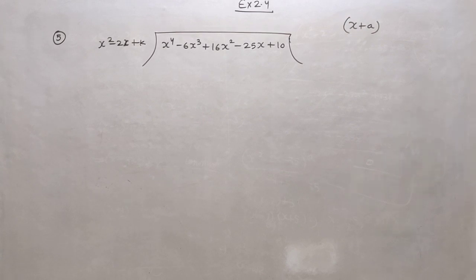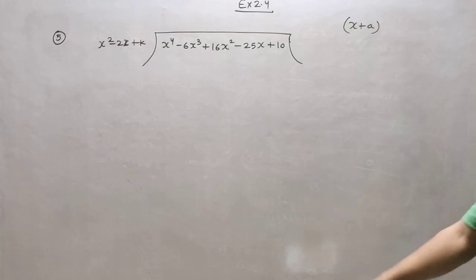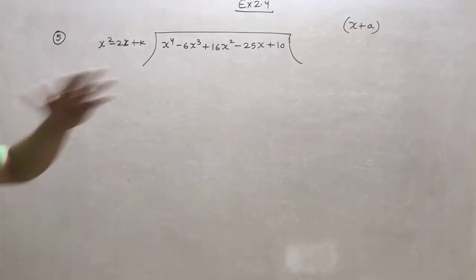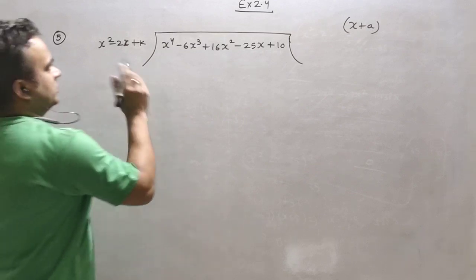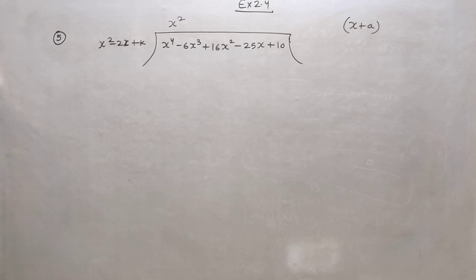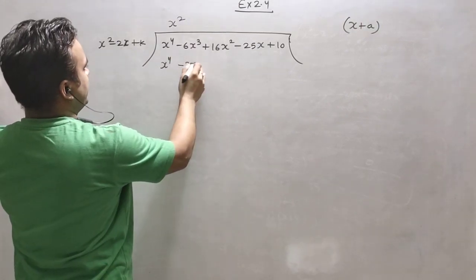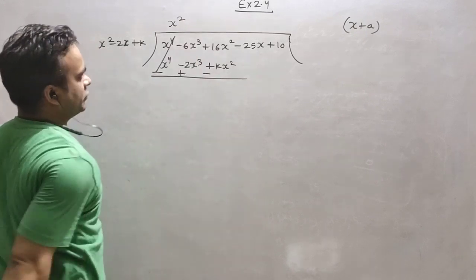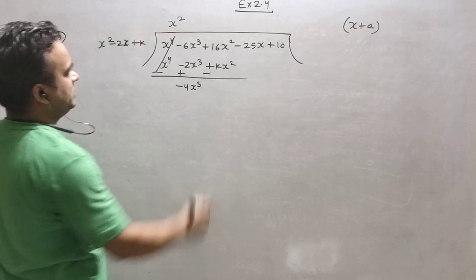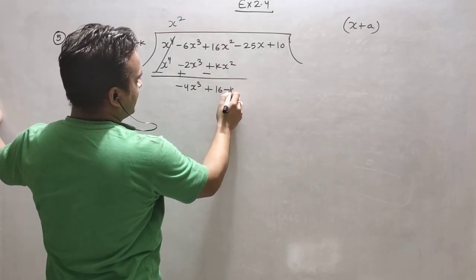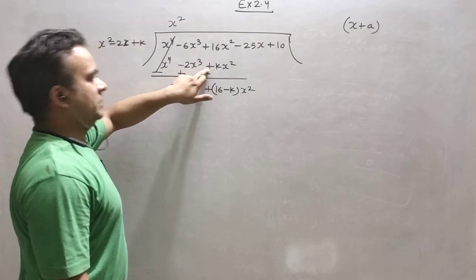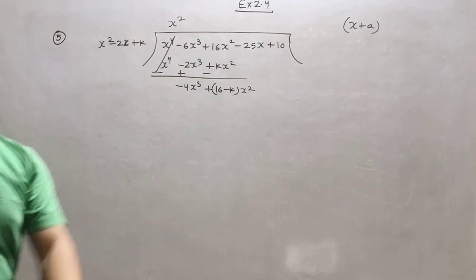Question number 5: x to the power 4 is divided by a divisor containing k. According to the question, x plus a will be the remainder. We will do the division and at the end compare with x plus a. Starting the division: x squared — it will be x to the power 4, 2x cubed, kx squared. Minus plus minus. Be very careful with the sign of this term because now it is minus, not plus — sometimes by mistake we write plus and the whole question becomes wrong.